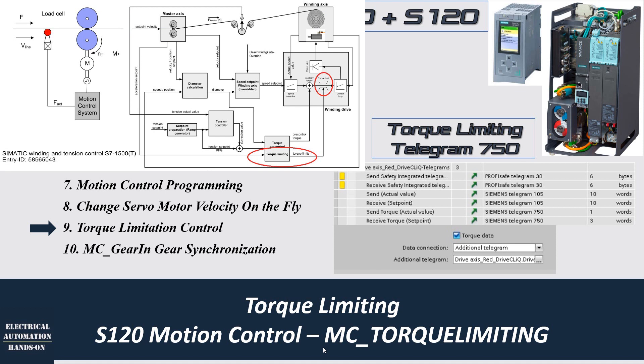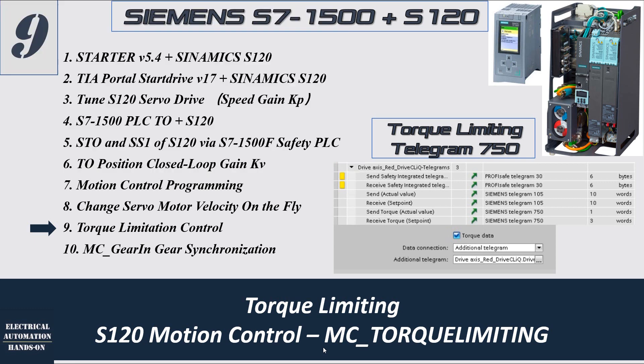The typical application when we use torque limitation is winder control. For example, when we control the winder in velocity control mode, we can involve torque limiting. We can set a certain upper or lower range so the force or tension delivered from the drive motor is limited. The motor may just be stuck or won't run — especially for the rewind application — so the motor can maintain the highest torque and keep the highest tension without breaking the web.